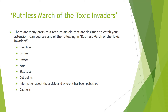There are many parts to a feature article that are designed to catch your attention. I'm going to read some of them out - I want you to see if you can identify them on your own copy of the feature article. Some of them you will know, others you might not - and that's perfectly fine, we're going to be learning about these as we go along. Can you see the headline? How about the byline? Images? What about the map? Can you see some statistics? Can you see the dot points? What about the information about where the article has been published? And can you see any captions?